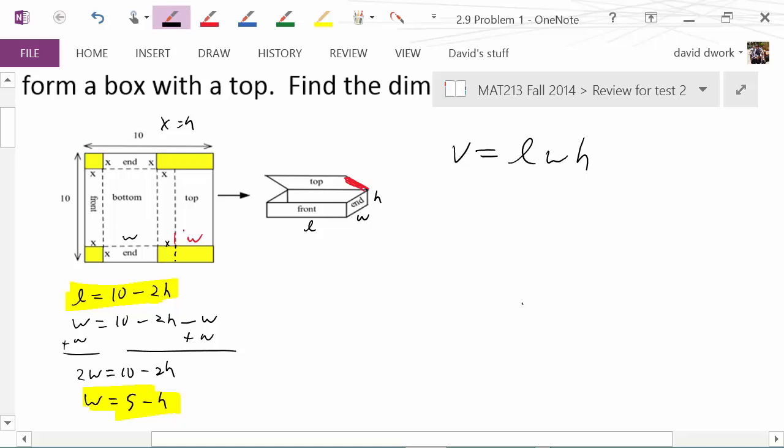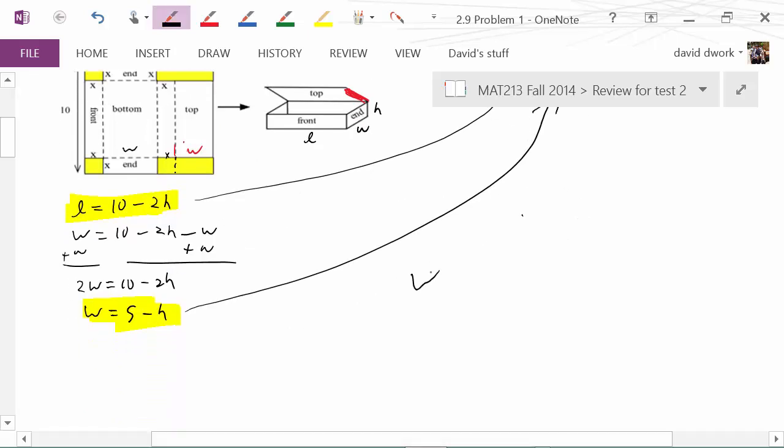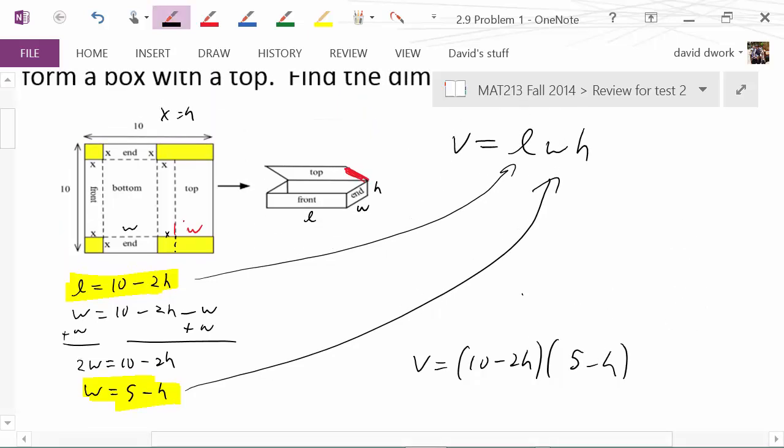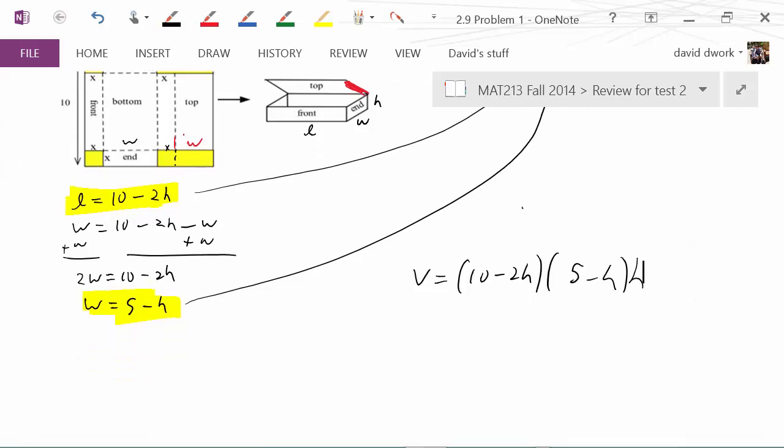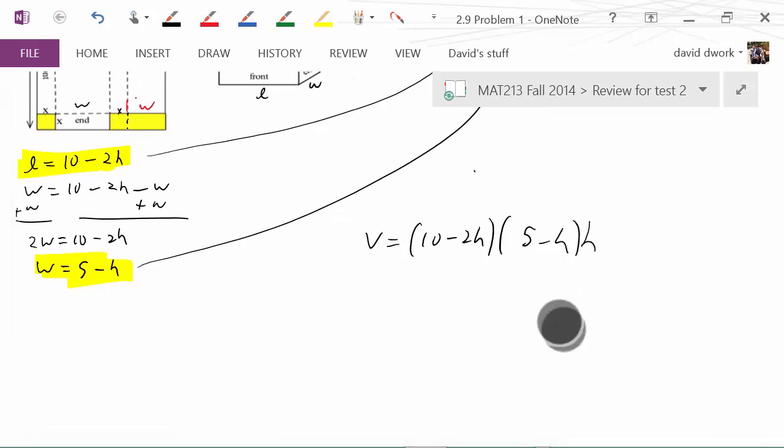For volume, we know that volume equals length times width times height. We don't want three variables in here, that would be horrible. We want to make as many substitutions as we can. We know length is 10 minus 2h, we know width is 5 minus h, so therefore that will give us a new volume equation of (10 - 2h) times (5 - h) times h.